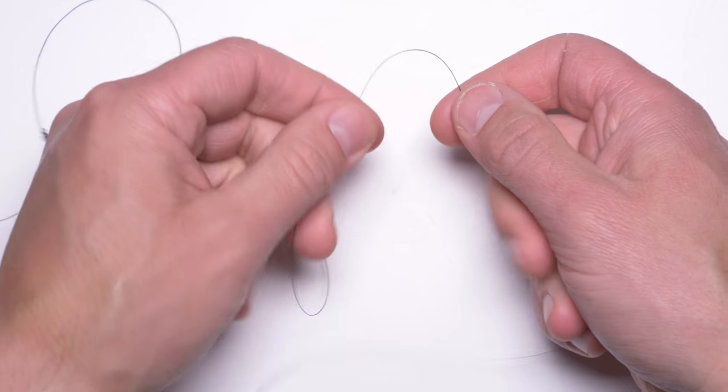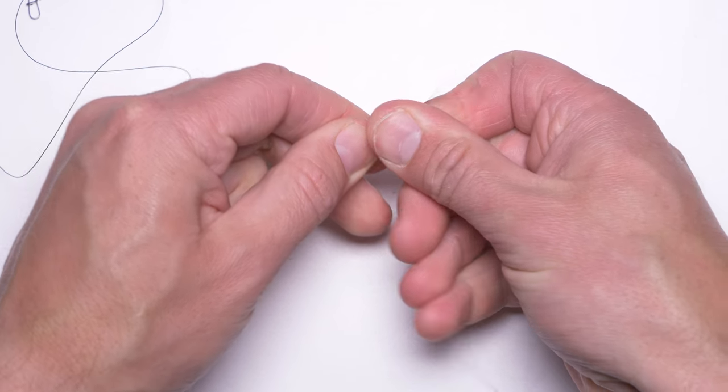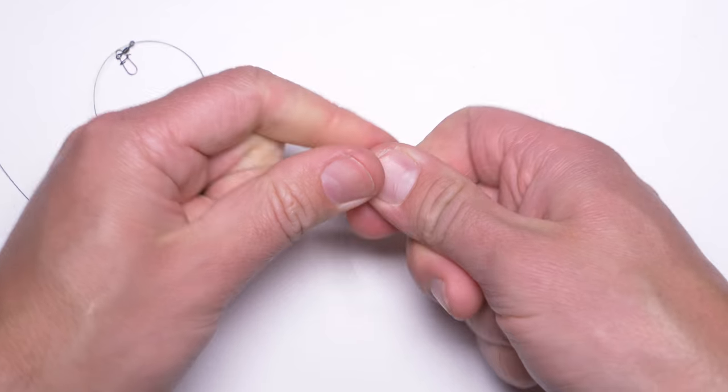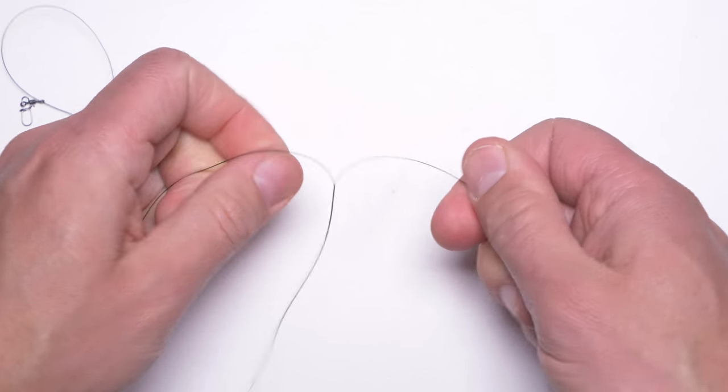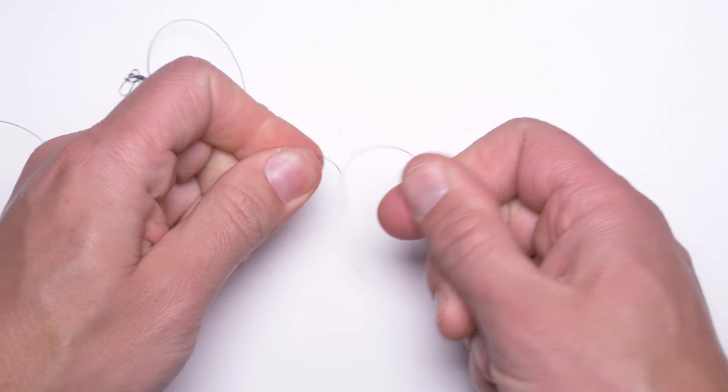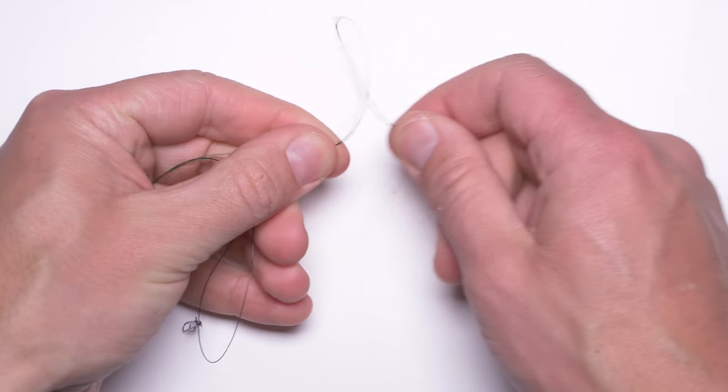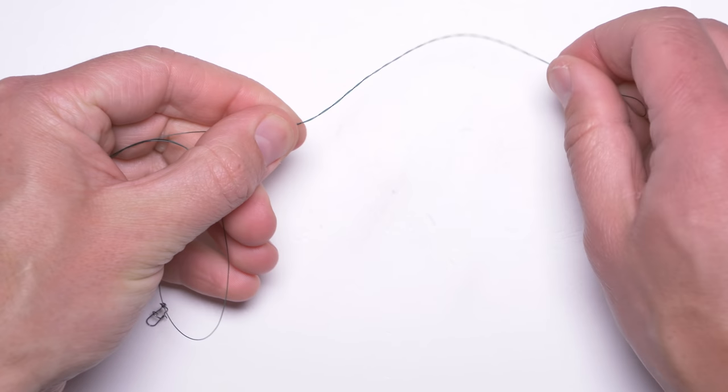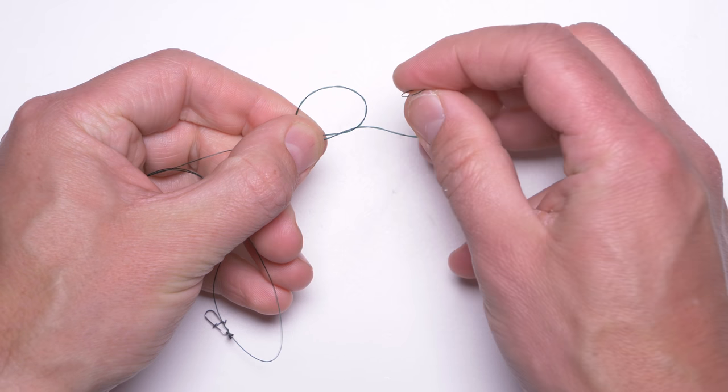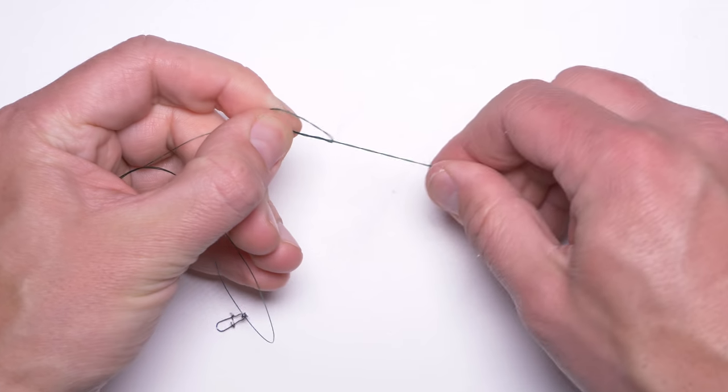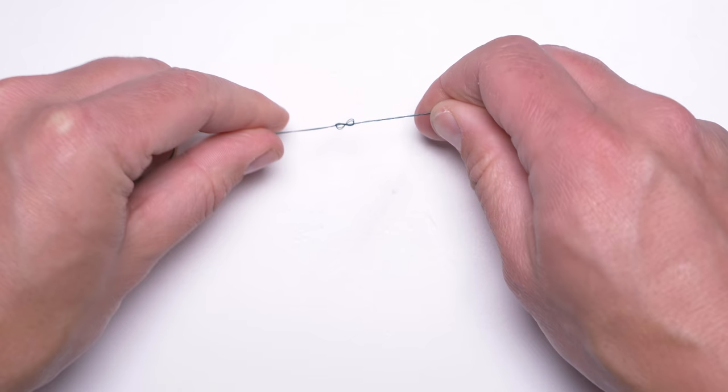Now I will form a twisted loop at the end of the shock leader. That's enough. Now I will tie a simple surgeon's knot. Double one. Again when tying your own knot, don't forget to wet it just before pulling it tight.